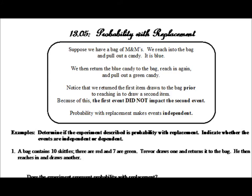When determining the probability of compound events, the first thing we want to know is if the events are independent or if they're dependent. If the scenario involves replacement, such as we saw with the cards and the bears, then the events are independent. Let's look at examples to determine if a scenario shows probability with replacement and independent or dependent events.